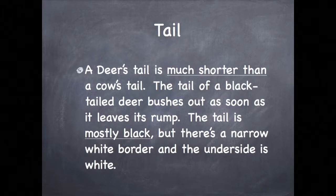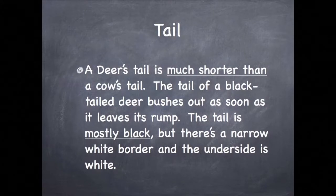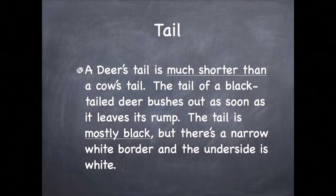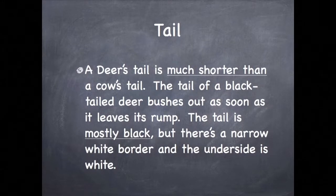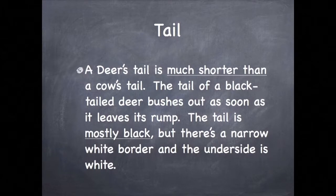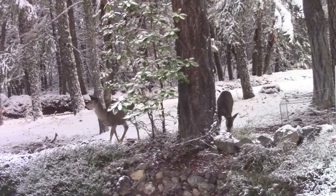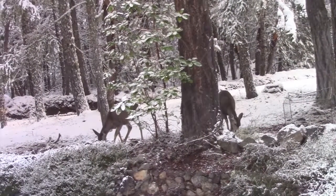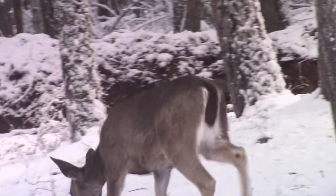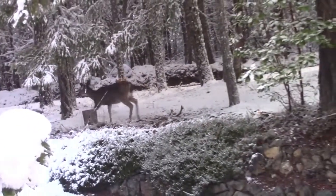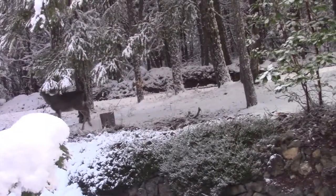Since we're describing an animal named a black-tailed deer, describing the tail and contrasting it with the cow are important distinctions to make. A deer's tail is much shorter than a cow's tail. The tail of a black-tailed deer bushes out as soon as it leaves its rump. The tail is mostly black, but there's a narrow white border, and the underside is white. Of course, there are many things we need to add to accurately describe these deer, but we'll move on to our homework now — I just wanted to use another animal other than a dog for comparison with a familiar animal.